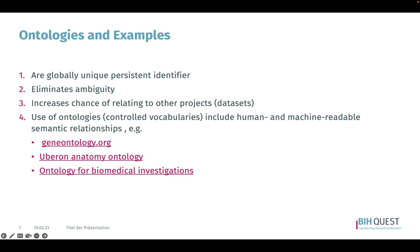Ontologies are essential tools in the world of data and information management. They serve as globally unique persistent identifiers, which means they are used to eliminate ambiguity in identifying different datasets and projects. By providing a clear and concise way to identify these projects, ontologies increase the chance of relating them to other projects, thereby enabling better collaboration and data sharing. One of the most significant benefits of using ontologies is the ability to establish controlled vocabularies that provide a common language for humans and machines. These vocabularies use semantic relationships to define the meaning of various terms, which can be used to represent complex information about different concepts.